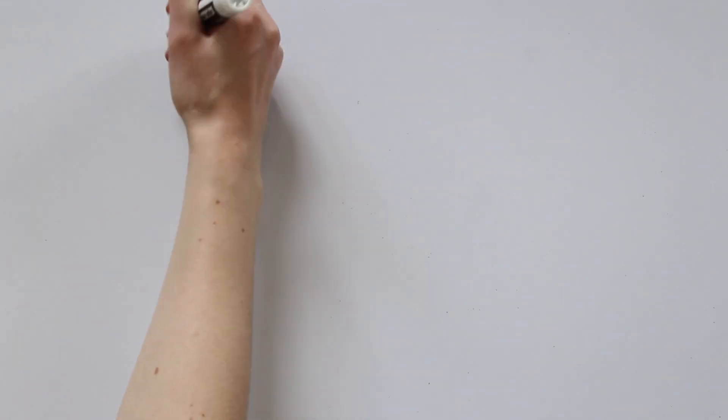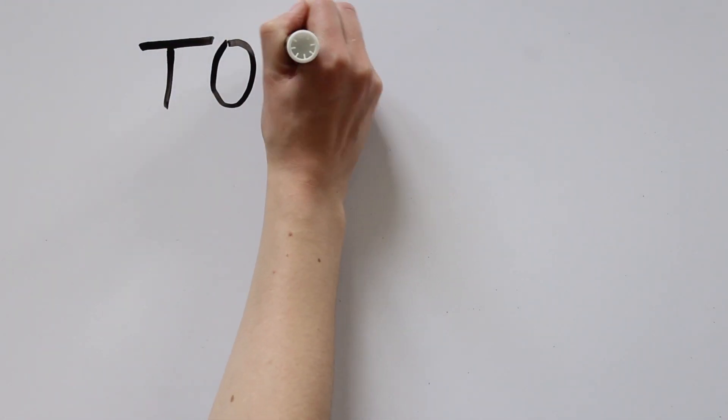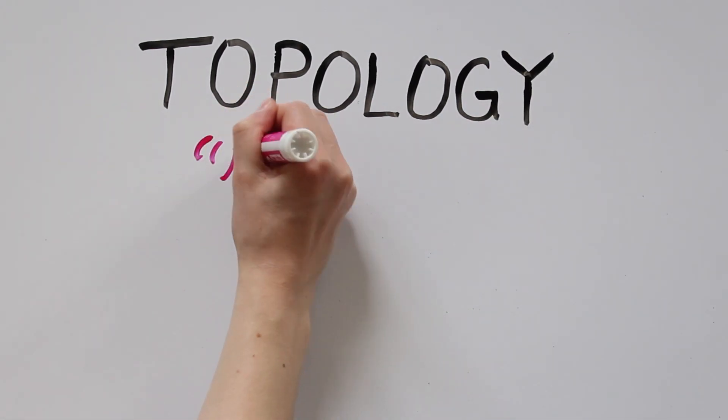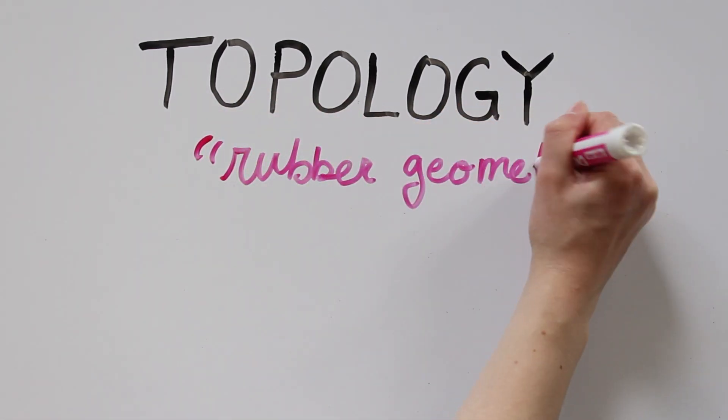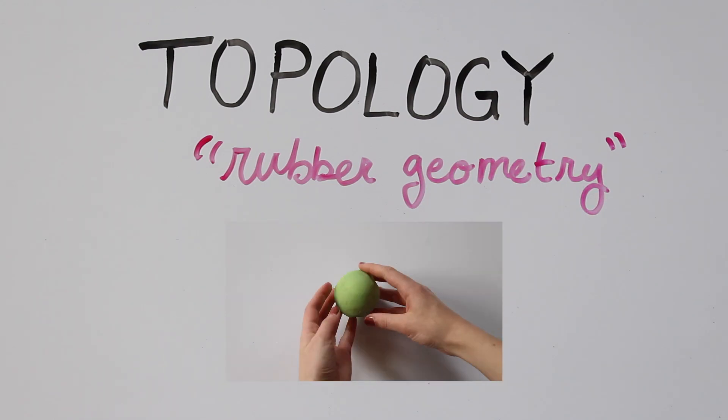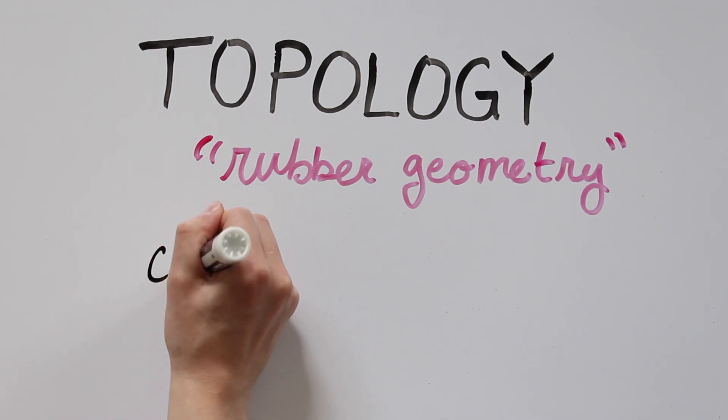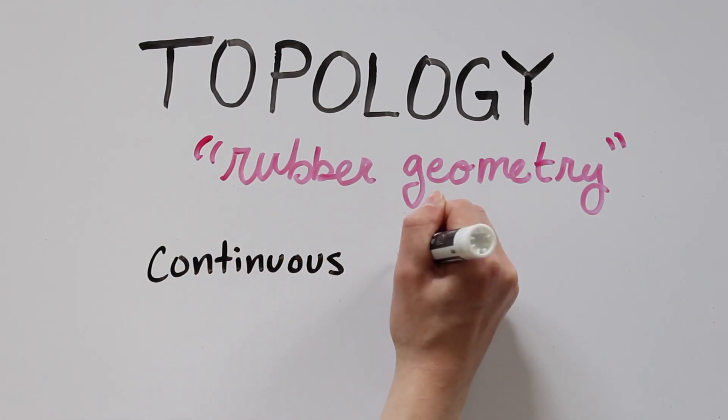So summing up the angles is one piece that we'll need for the Gauss-Bonnet theorem, but the other piece has to do with topology. Often nicknamed rubber geometry, topology is concerned with properties of shapes which aren't affected by squishing and stretching. The technical word for squishing and stretching is continuous deformation.